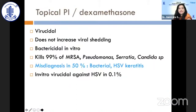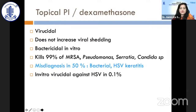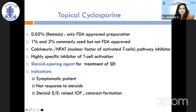Topical povidone-iodine has gained further attention during the COVID era. It is virucidal, does not increase viral shedding, and kills 99 percent of bacteria including MRSA, Pseudomonas, Serratia, and Candida. In vitro virucidal activity has also been demonstrated against herpes simplex virus.